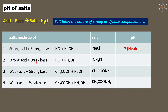Ammonium chloride is made up of a strong acid and a weak base. Since the strong component of the salt is acidic in nature, the salt solution will also be acidic with a pH value less than 7.